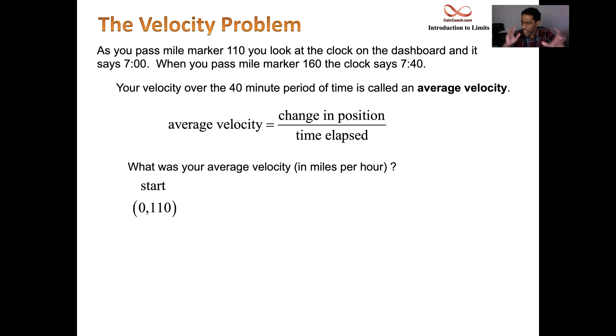So let's plot them. Just think of them as two different points. We have the point (0,110). When time equals zero, you're at position 110. When time equals two thirds, that's the fraction of an hour that 40 minutes is, you're at mile marker 160. What are you gonna do? You're gonna subtract 160 minus 110. That's gonna be your numerator. And you're gonna subtract two thirds minus zero, and that's gonna be your denominator. And that will be your average velocity.